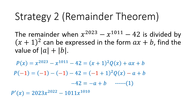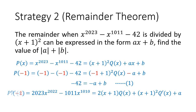If we differentiate the dividend, our new polynomial will be 2023 x to the power of 2022 minus 1011 x to the power of 1010. The negative 42, when differentiated, vanishes. On the right-hand side, we employ the product rule to differentiate x plus 1 squared times qx. When we differentiate x plus 1 squared, we get 2x plus 1 multiplied by qx, but we also keep the x plus 1 squared and differentiate qx as well. When we differentiate the remainder, ax plus b will just become a. Now, substituting x equals to negative 1, the dividend becomes 2023 times 1 minus 1011 times 1. The x plus 1 and x plus 1 squared terms become 0, killing away qx and q'x, leaving behind only a.